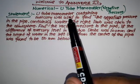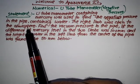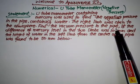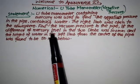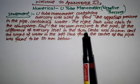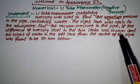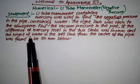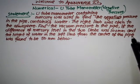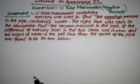There are two limbs in the manometer: right limb and left limb. According to the statement, the right limb of the manometer is open to the atmosphere. We need to find the vacuum pressure in the pipe if the difference of mercury level in the two limbs is 100 mm, and the height of water in the left limb from the center of the pipe is 50 mm below.